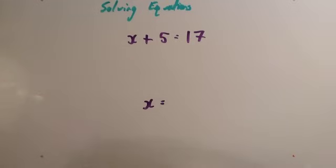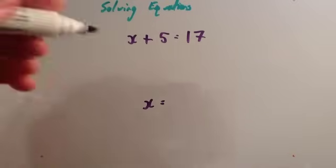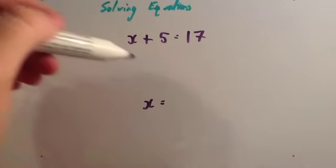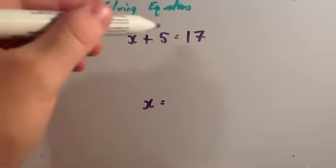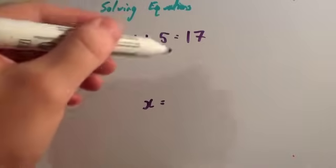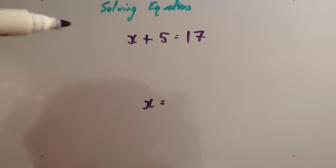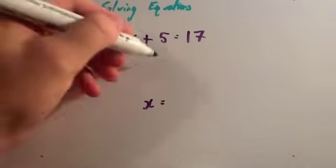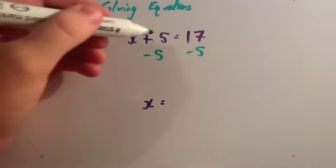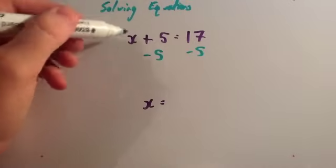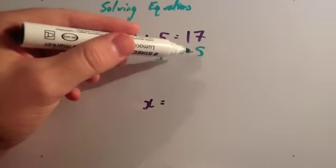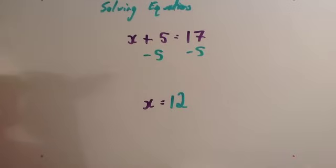But we want to start getting a technique you're going to use for all equations — they're not all going to be as easy as this one. Whenever you want to solve equations, you want to get x's on one side and numbers on the other. You want to remove any numbers from the left-hand side. You've got x plus 5, so you want to get rid of the plus 5. To get rid of something from one side of an equation, you do the inverse operation — the opposite — to both sides. So to get rid of the plus 5, subtract 5 from both sides. 5 take away 5 is 0, so you're left with x on the left-hand side. 17 take away 5 is 12. So we have solved that equation: x equals 12.